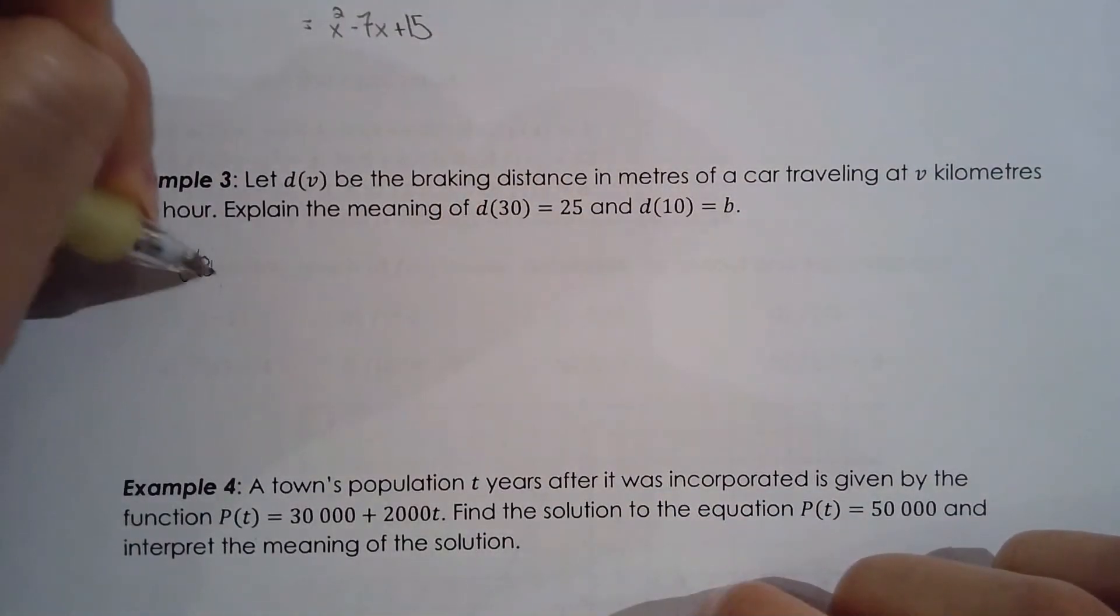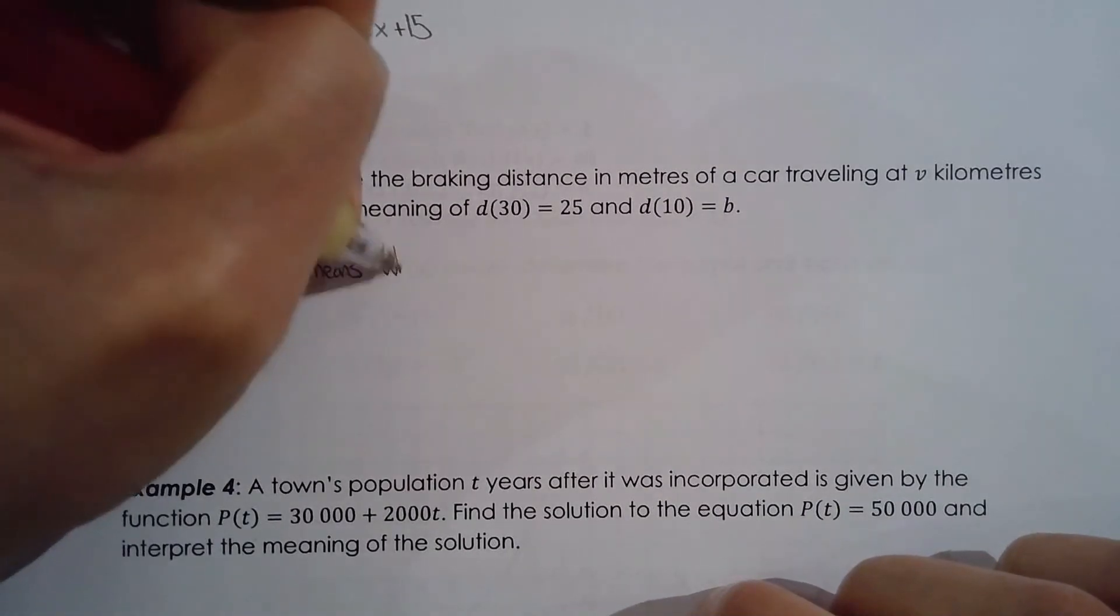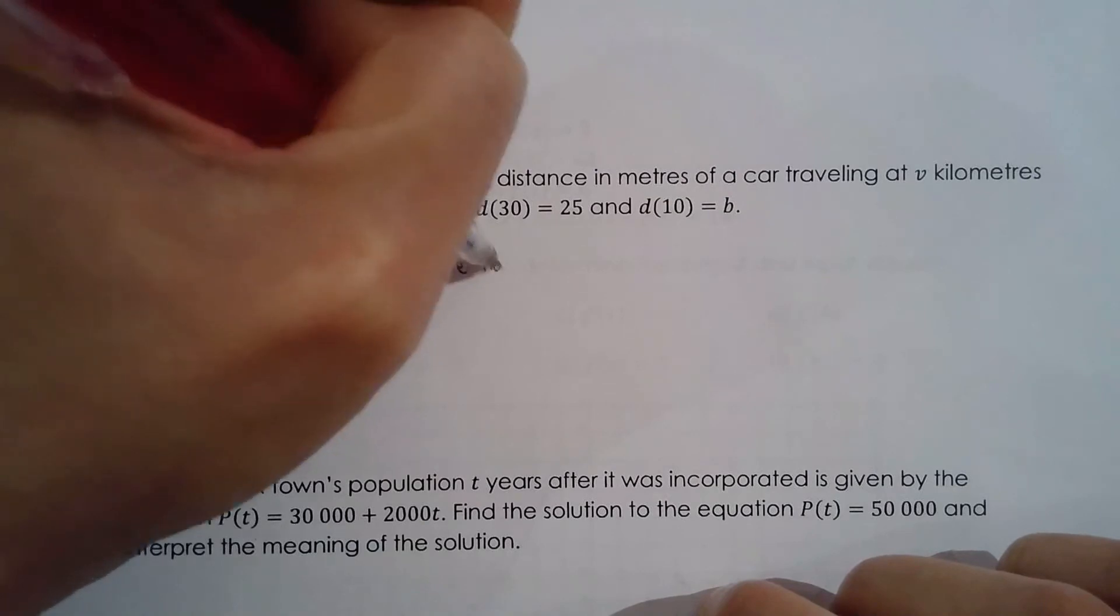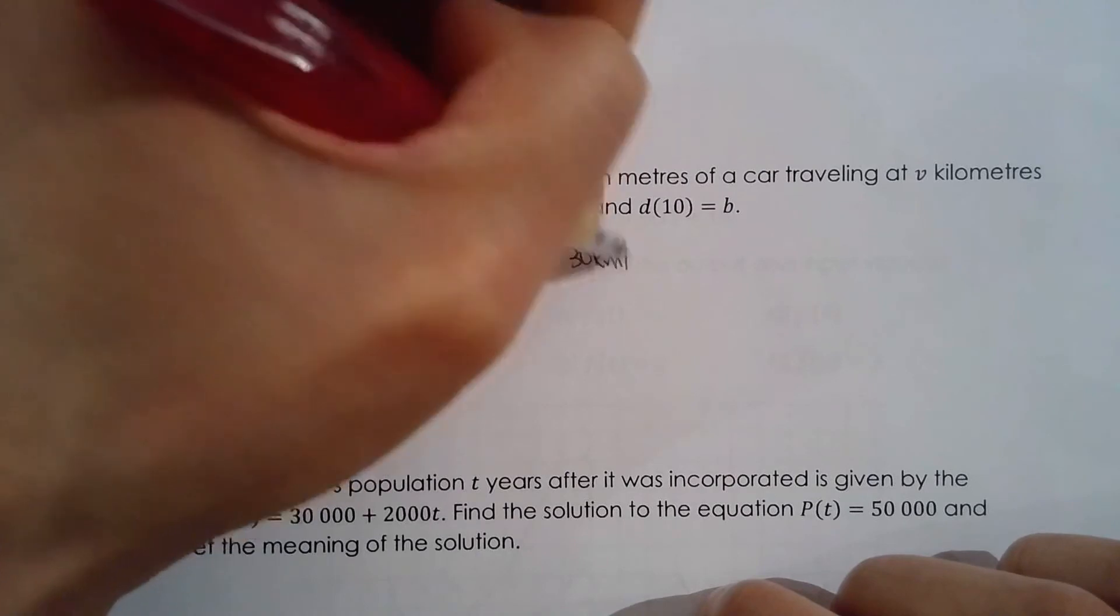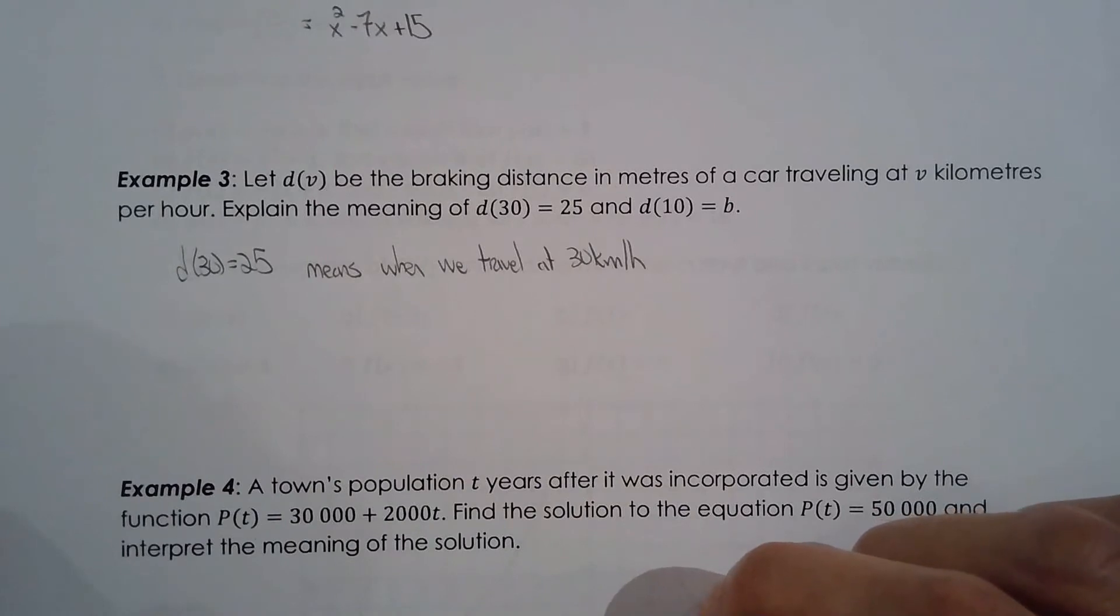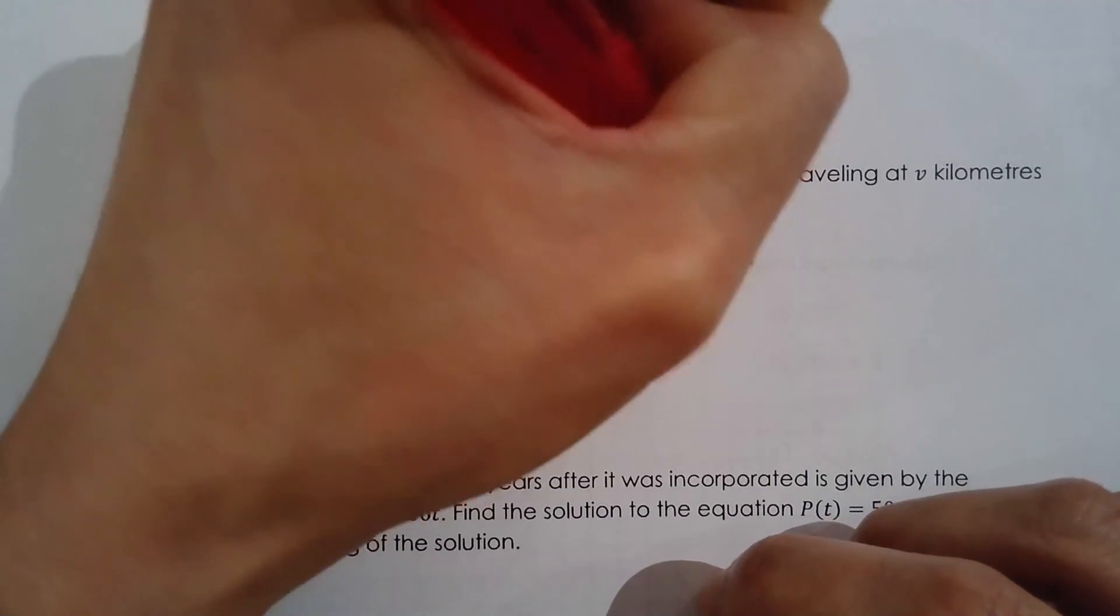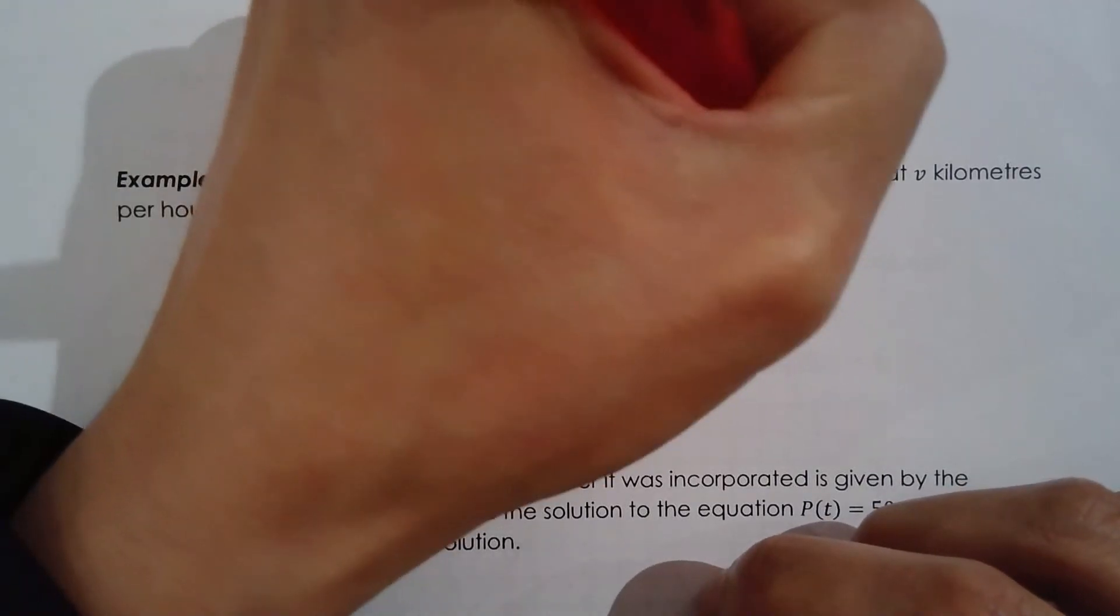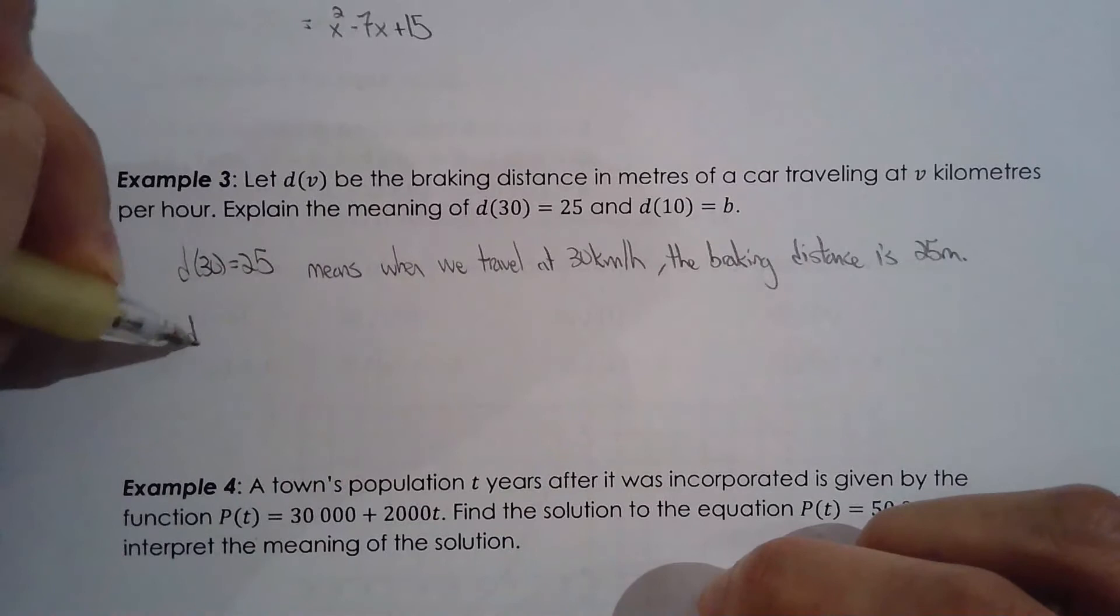So d of 30 equals 25 means when we travel at 30 kilometers per hour, the braking distance is, what's the output? 25, right. The braking distance is 25 meters.